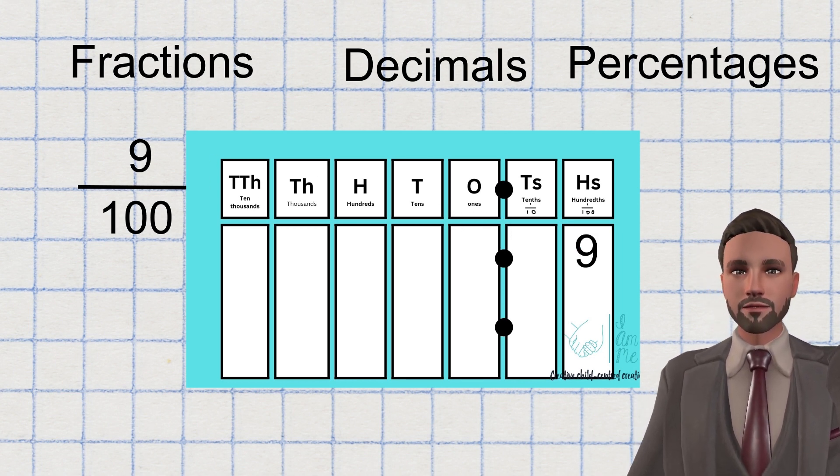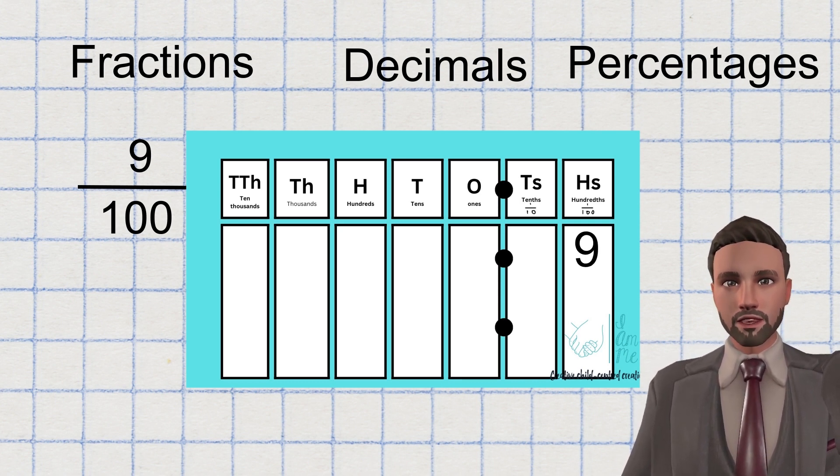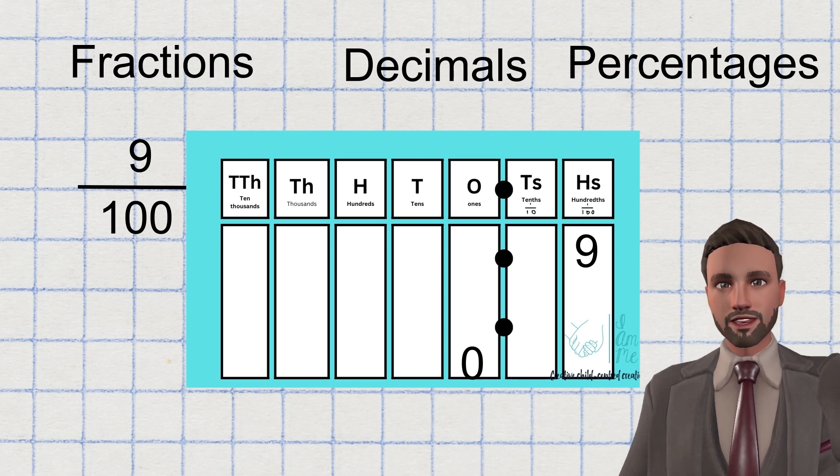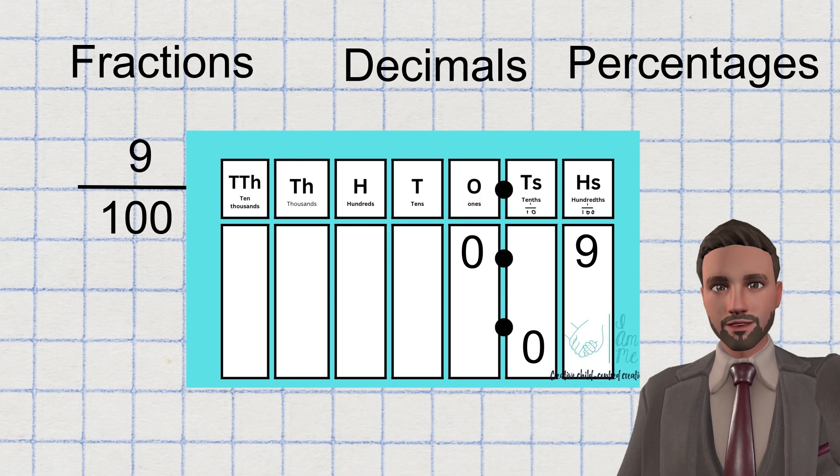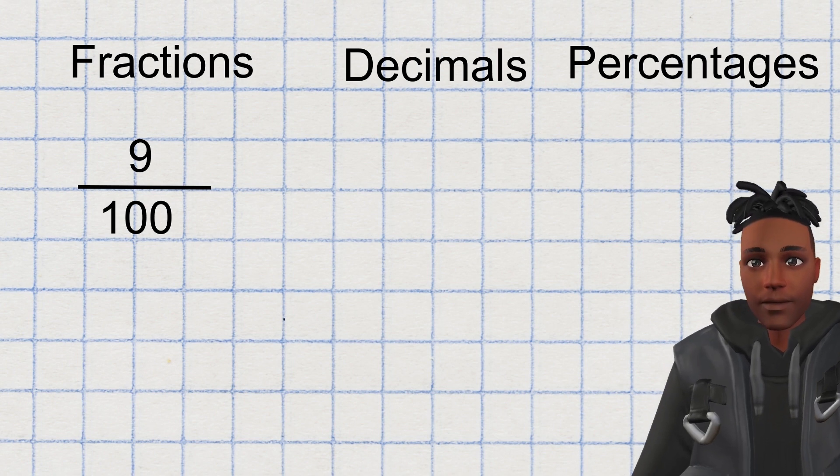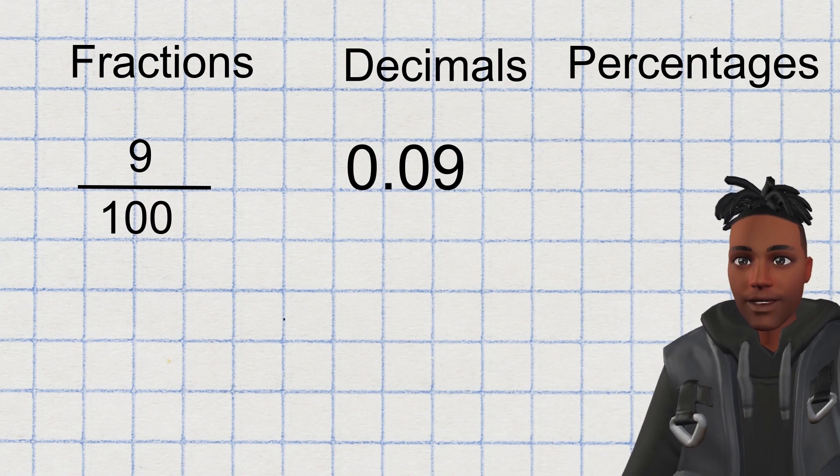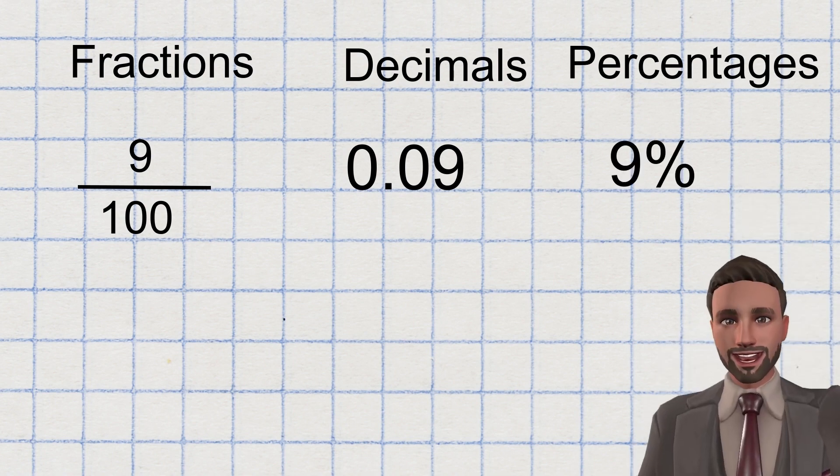And just like Wednesday's problem, any column that doesn't have anything, you need to put the zero. So nine into the hundredths column. Zero before the decimal point. And zero after the decimal point in the tenths column, because we've got no tenths. We've just got nine hundredths. So, if the decimal is 0.09, the fraction is nine hundredths. The percentage must be nine percent, right? Excellent. You've smashed it.